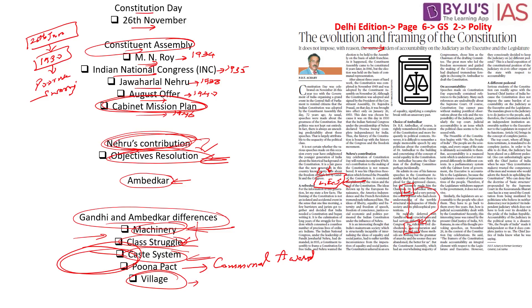When it comes to the legislature, they are kept in check by periodic elections — every five years the people elect or remove them from power. The preamble of the constitution starts with 'We the People of India,' meaning the ultimate sovereign power is the people. The people elect the legislatures, the legislature keeps a check on the executive, and the legislature itself is kept in constant check by the sovereign people.